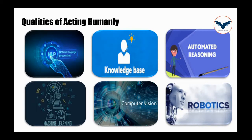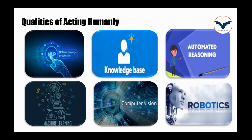Next we will go to the knowledge base. Knowledge representation in artificial intelligence is to store what it knows or hears. Basically, it is a study of how the beliefs, intentions, and judgments of any intelligent machine can be expressed suitably for a particular task. For example, if I tell a machine to cry, it should cry but it won't laugh. That is the best example for knowledge base.